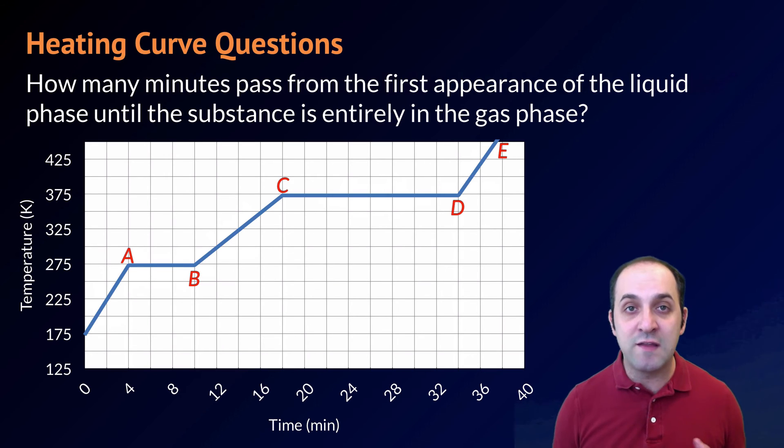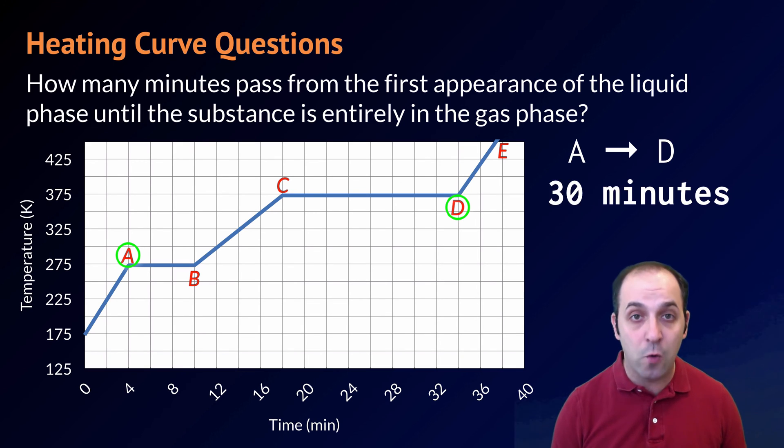So the thing to do here is to take a moment and look at the question and understand what the question is asking us. The first appearance of the liquid phase is going to be when the substance enters the melting process, which is shown here as interval A on this graph. The substance will be entirely in the gas phase once it's done boiling, which is shown here as interval D on the graph. So we need to know the total amount of time necessary to go from interval A to interval D. In order to do that, we have to figure out the times. Interval D is at 34 minutes, and interval A is at 4 minutes. So 34 minus 4 gives us 30 minutes total time as the answer to this particular question. Does that make sense?